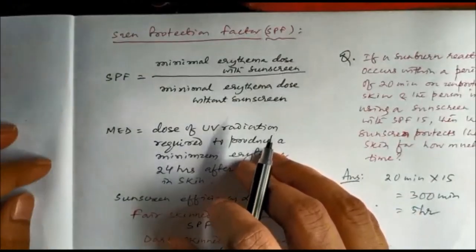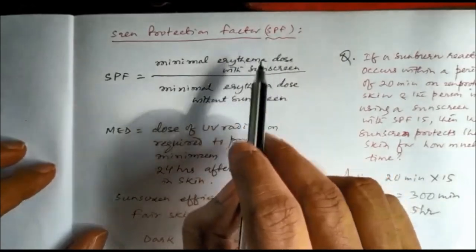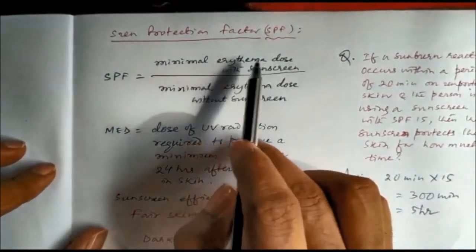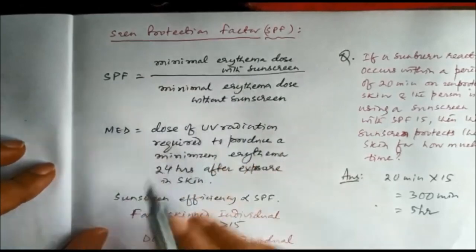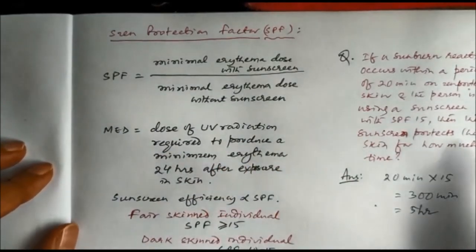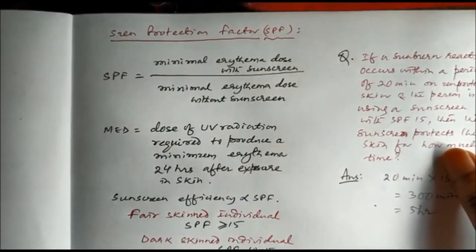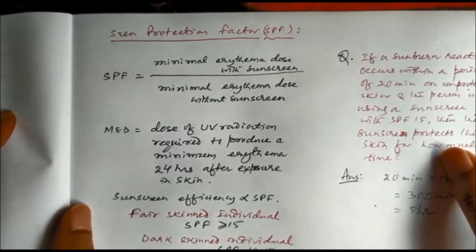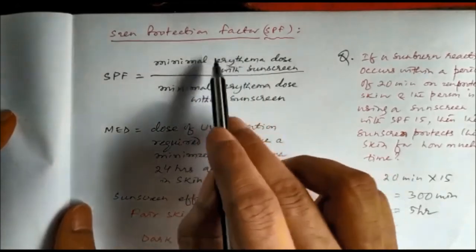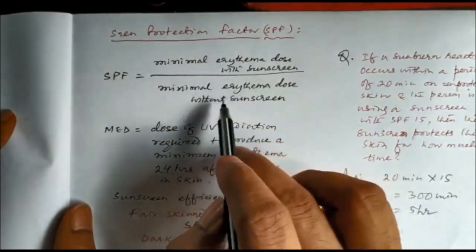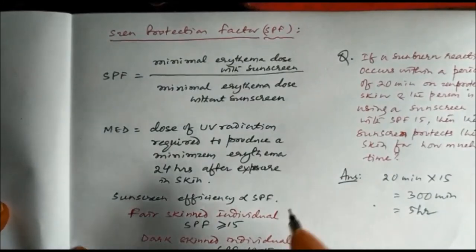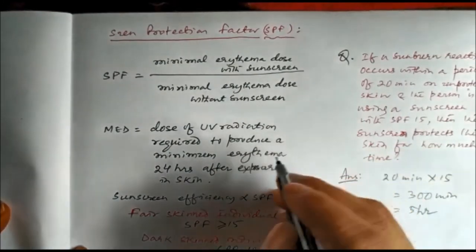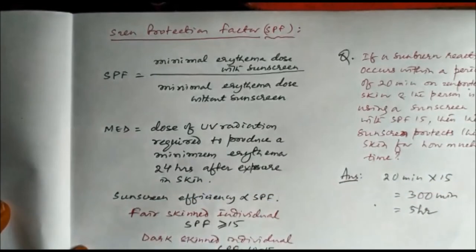The efficiency of sunscreen agents is measured by the Sun Protection Factor (SPF), which is the ratio of the minimal erythema dose with sunscreen agent divided by the minimal erythema dose without sunscreen agent. The minimum erythema dose is the dose of UV radiation required to produce minimum erythema 24 hours after exposure. An SPF ratio above 10 is considered good.